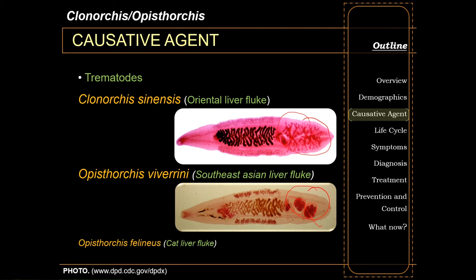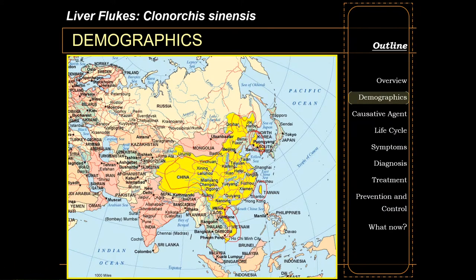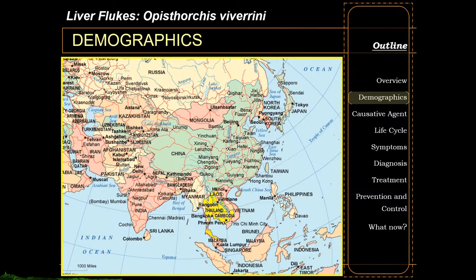Given the name oriental liver fluke, Clonorchis sinensis is usually seen in countries along the rivers of Korea, China, Vietnam, and Taiwan. Opisthorchis viverini, on the other hand, is usually seen in the southeast Asian nations of Thailand, Cambodia, Laos, and Vietnam. Opisthorchis felineus is usually seen in Europe and the former Soviet Union.